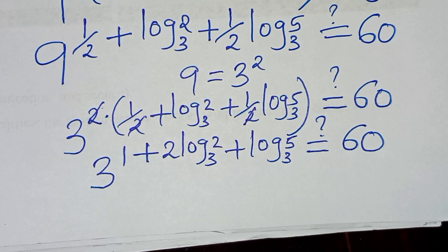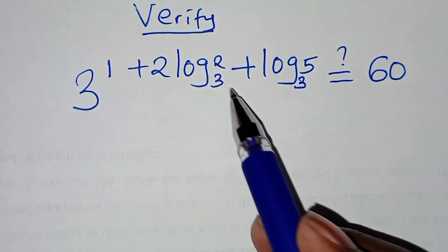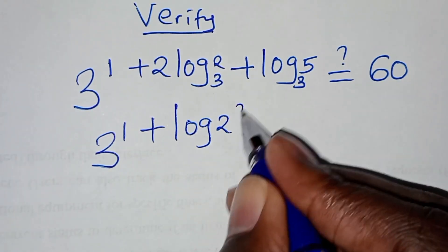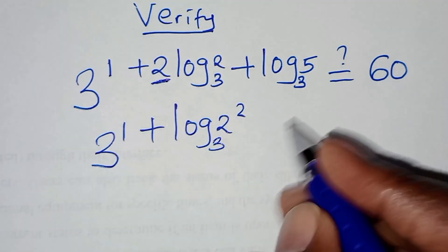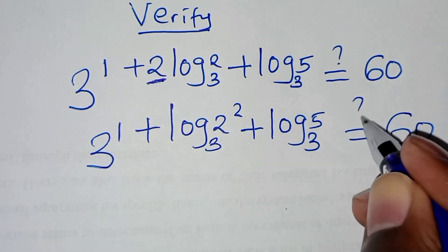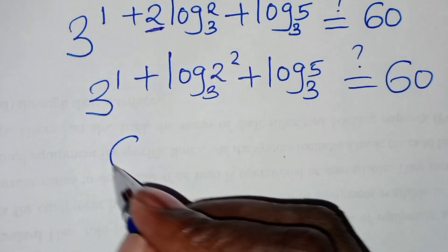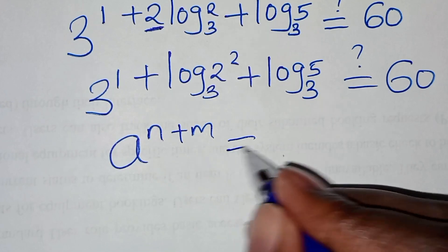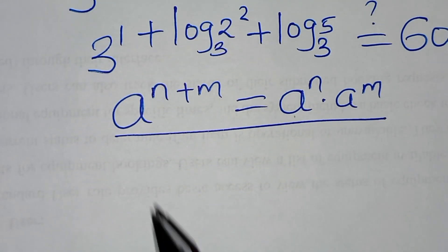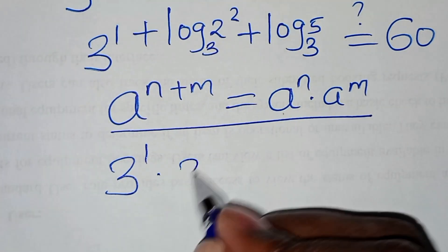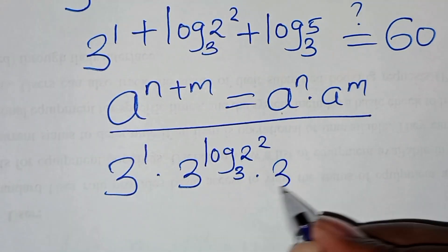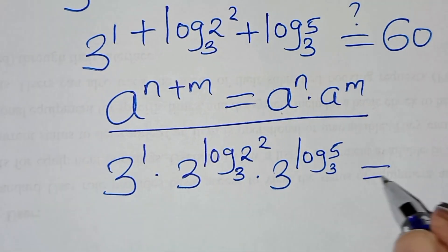So let's check if this is true. We have 3 to the power 1 plus log base 3 of 2 squared plus log base 3 of 5. This can be expressed as 3 to the power 1 plus log base 3 of 2 squared plus log base 3 of 5, which is in the form of a to the power n plus m, and we can express that as a to the power n times a to the power m. Applying this exponent property, we have 3 to the power 1, times 3 to the power log base 3 of 2 squared, times 3 to the power log base 3 of 5. This should give us a value of 60.